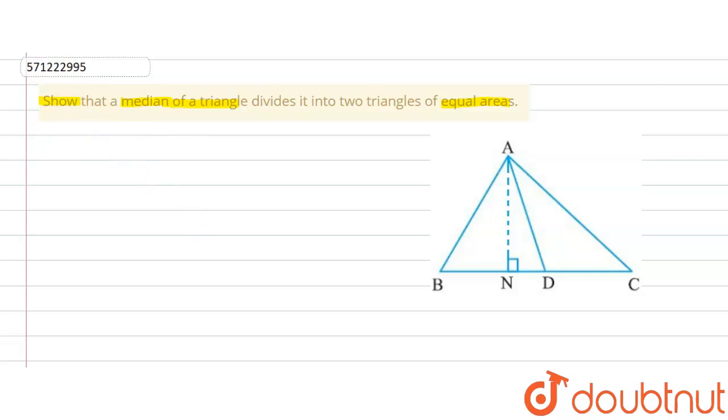Let's first write down what has been given in the question. We are given a triangle. We have taken the triangle to be triangle ABC with AD as the median.